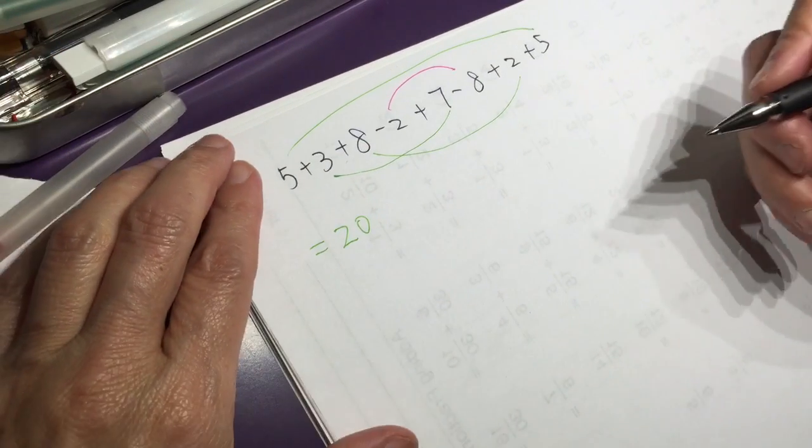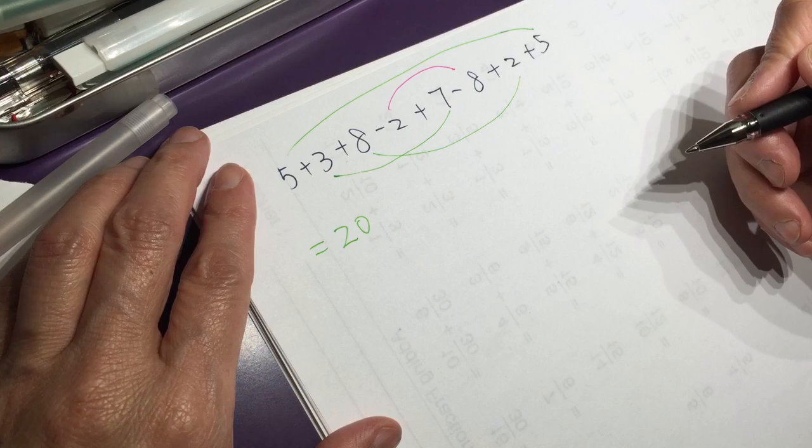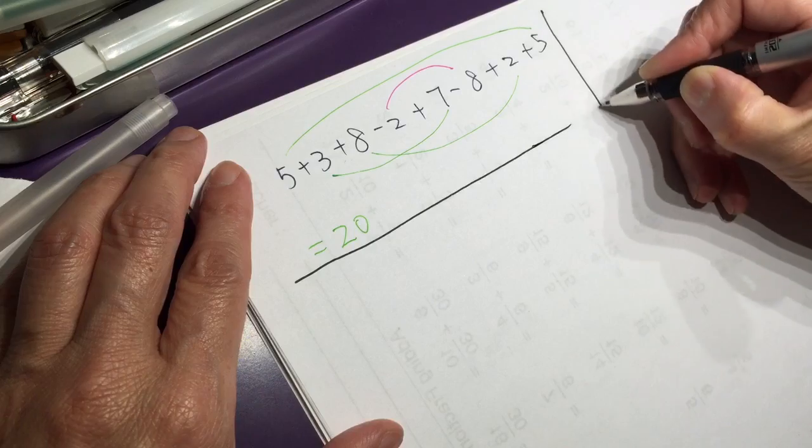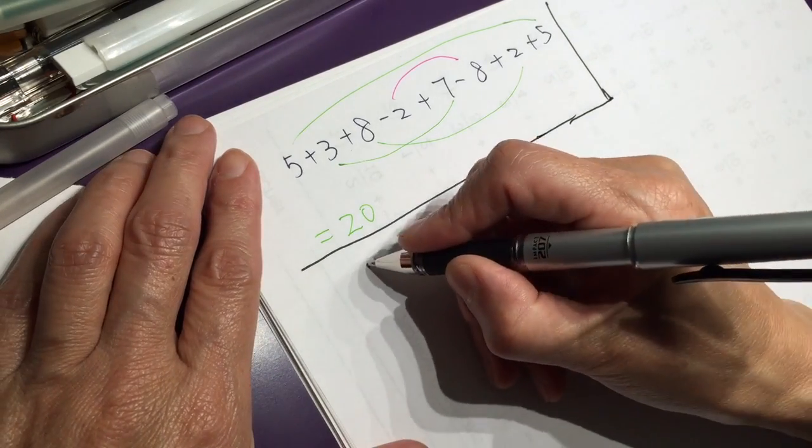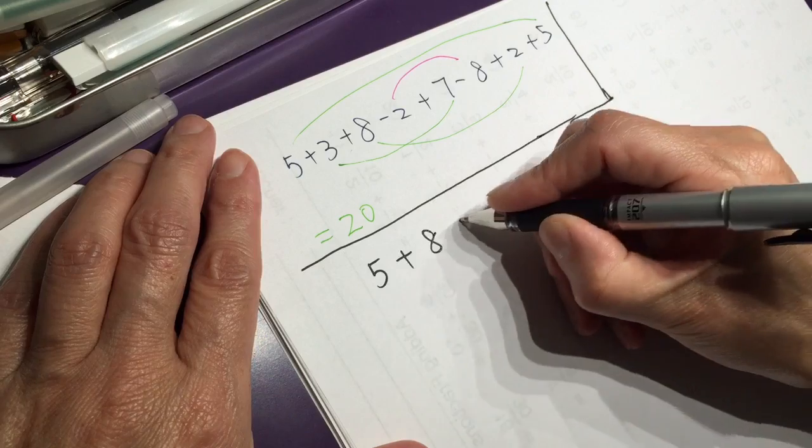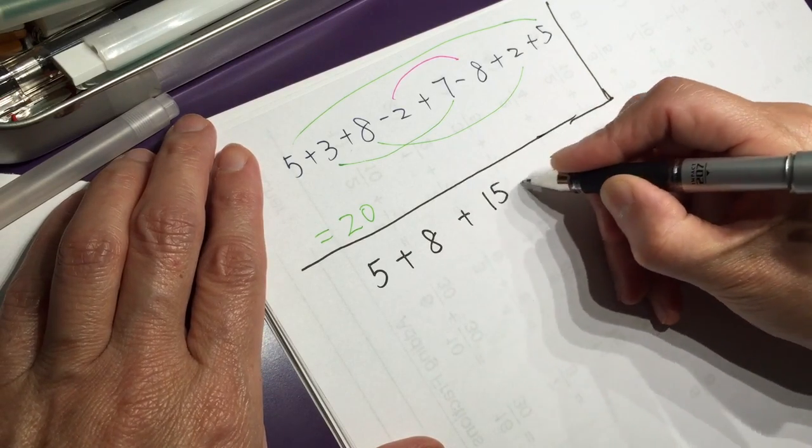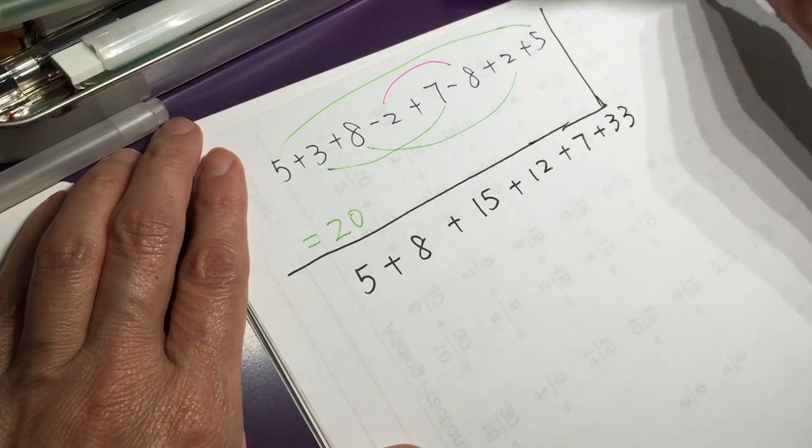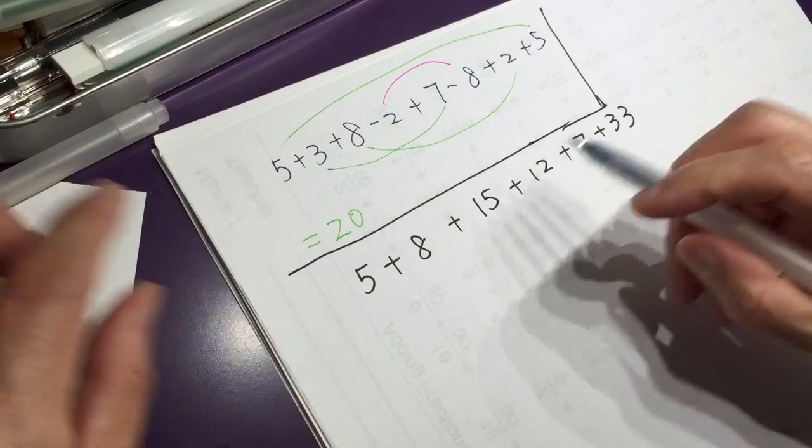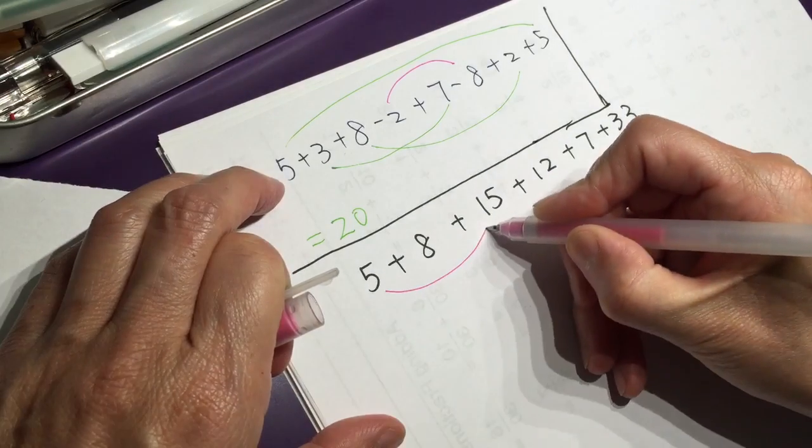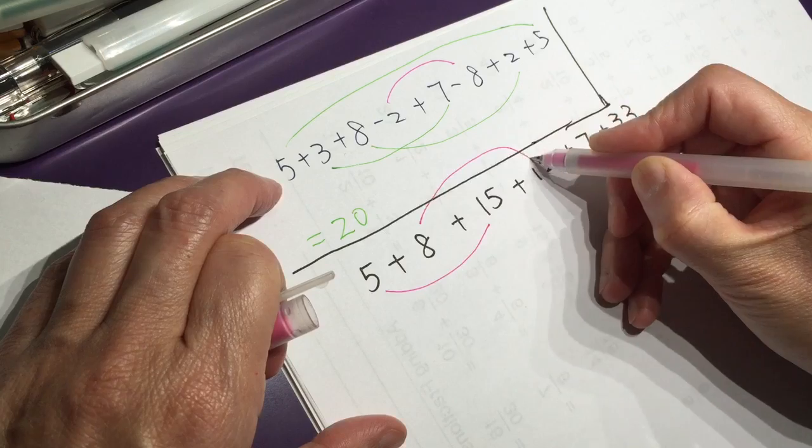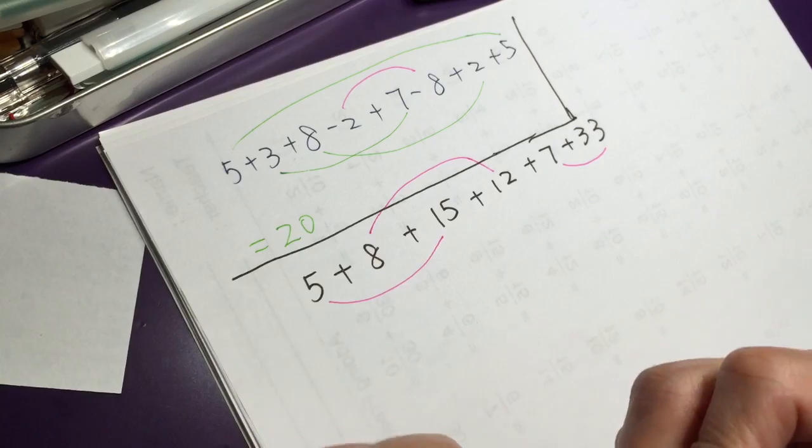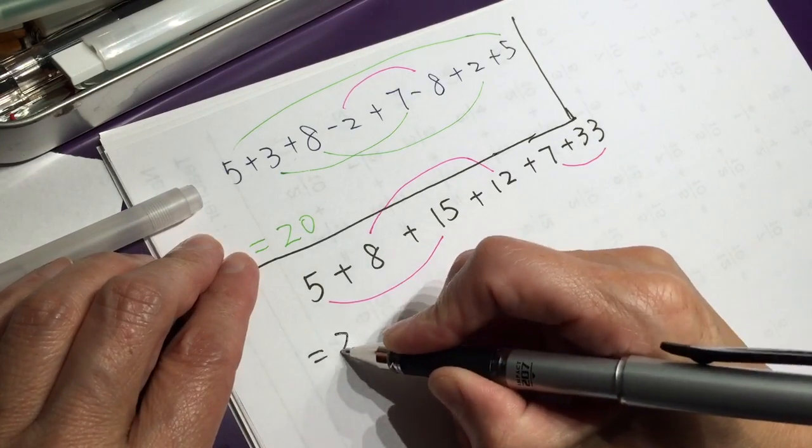We will do something different. I like to do this exercise in class and everybody was laughing, very happy. So you will see the practice I do and you get what I am trying to say. 5 plus 8 plus 15 plus 12 plus 7 plus 33. So when you see this, the last number 5 and 5 let's make 10. 2 and 8 make 10, 7 and 3 make 10.